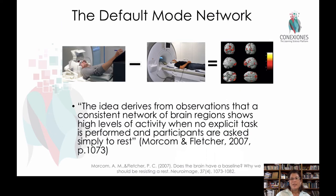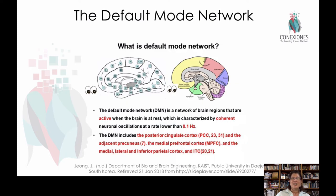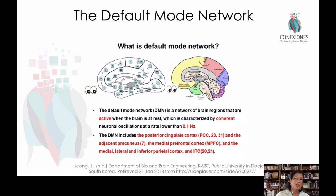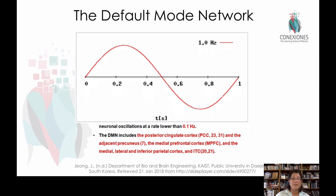Then we'll move on to explain a little bit more technically the default mode network — what's going on in your head when you're told don't do anything. How is it that those thoughts go ping-ponging around, and what actually occurs in your brain? And why might that potentially be a positive thing? What are the studies showing the relationship between the default mode network and creative or divergent thinking?